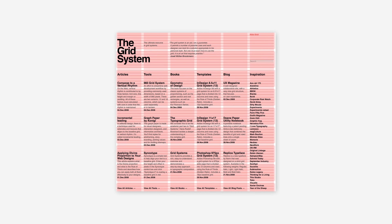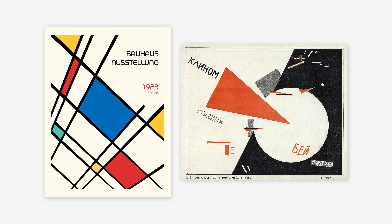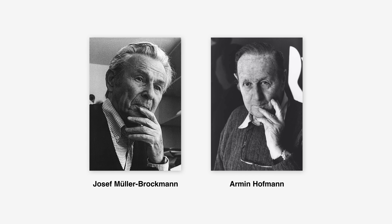Swiss design took a scientific approach to composition, treating design as a problem-solving process rather than an artistic endeavor. This approach was influenced by the principles of the Bauhaus and constructivist movements, which emphasized functionality and rationality. Designers like Joseph Müller-Brockmann and Armin Hoffmann played a crucial role in developing and promoting this method.